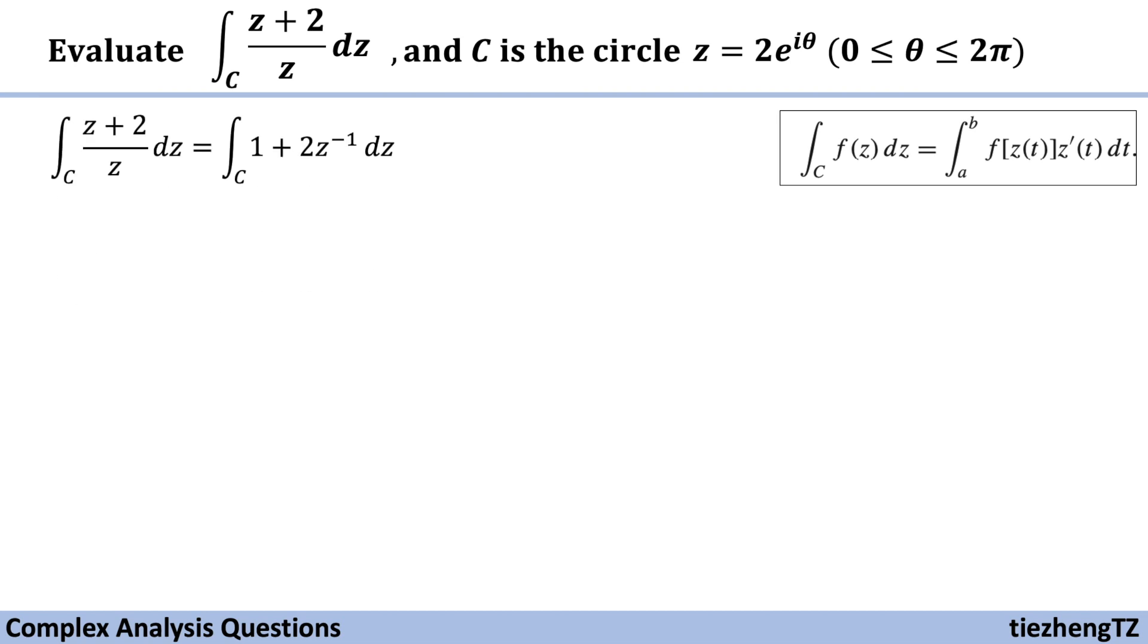So first, our equation can be changed into 1 plus 2 times z to the power of minus 1. And in our case, f z theta is 1 plus 2 times 2 times e to the power of i theta, the whole part to the power of minus 1. And z theta, first derivative is 2 times e to the power of i theta times i.